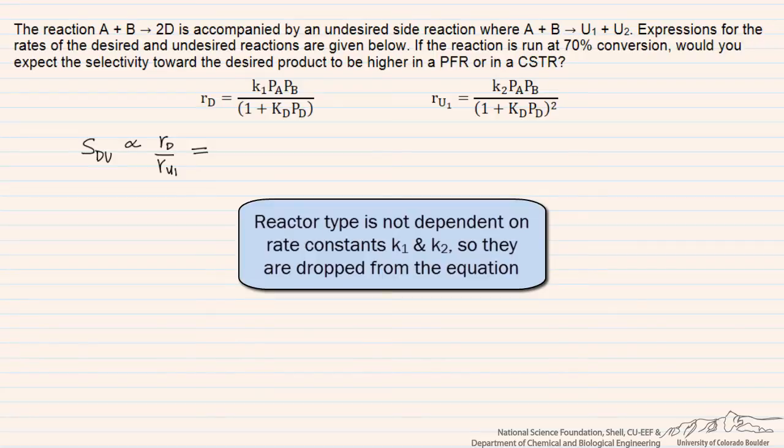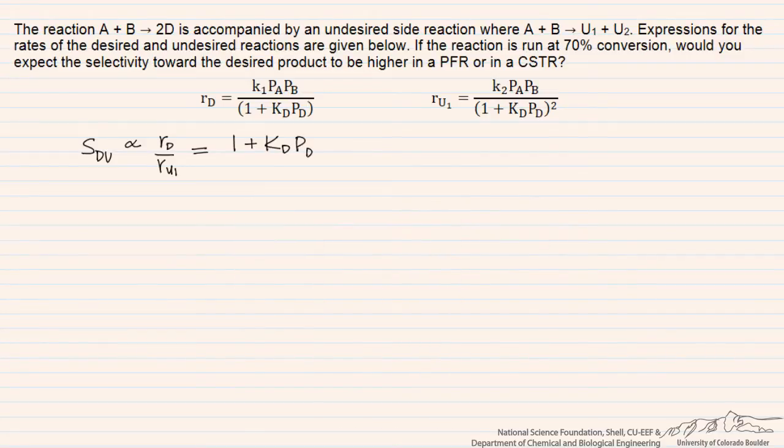We end up with the selectivity being equal to 1 plus kd times pd, and so this means that the selectivity to the desired product is going to go up as we have more product that's been formed, more of the desired product that's been formed.